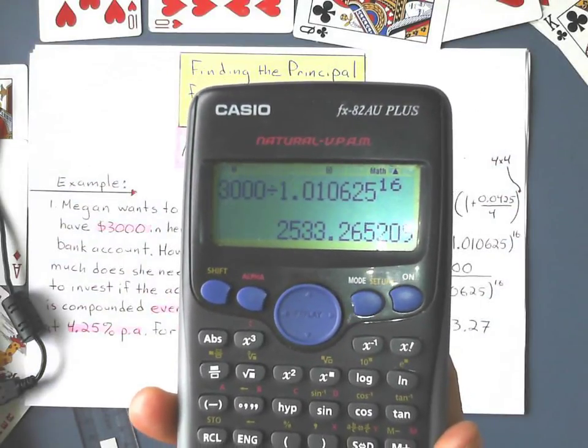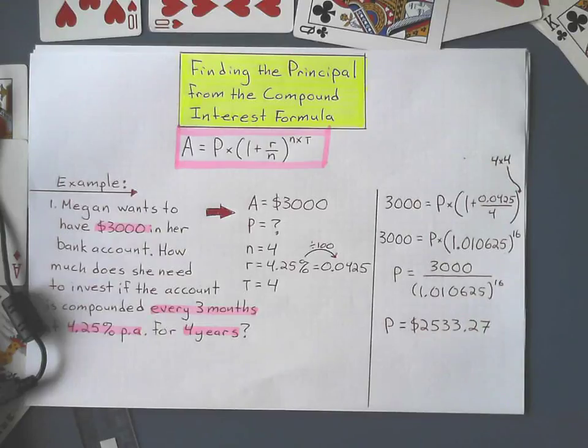So that means Megan, if she wants $3,000 after four years, has to put this much amount to start it up, $2,533.